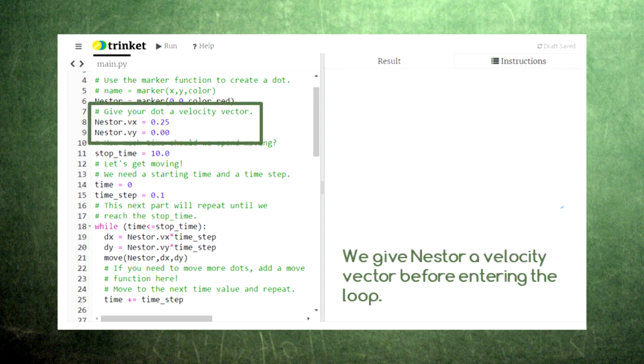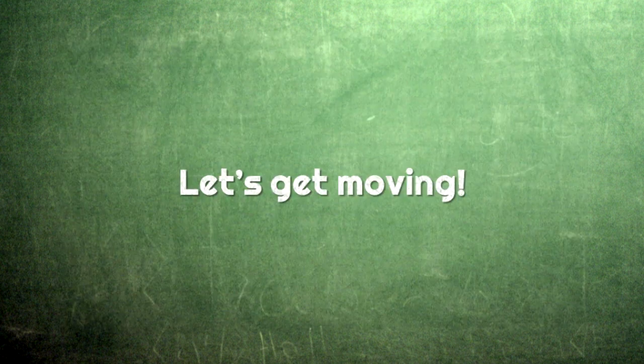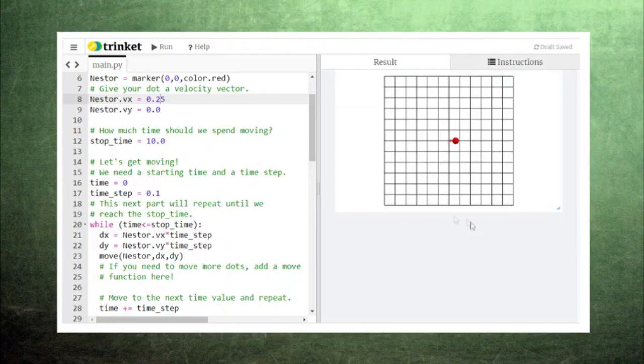Here is where we set Nestor's velocity. Notice that we're giving Nestor two values for velocity, one for the x-direction and one for the y-direction since velocity is a vector. When we run the code, we see Nestor creep to the right at the speed specified by his velocity vector. If you look carefully, you can see that his motion is actually created by repeated jumps across the screen.